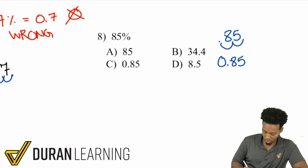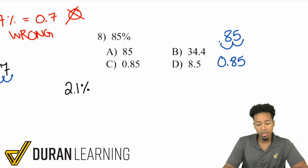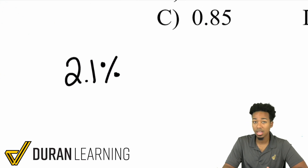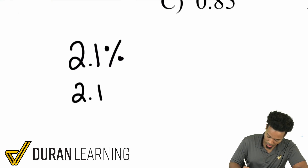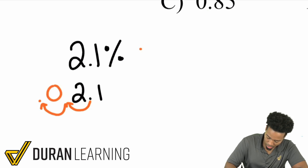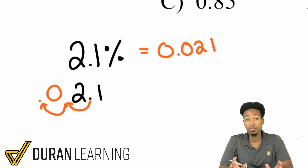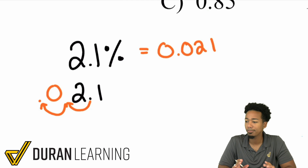Here are a couple of other examples. Let's say we're taking a look at 2.1%. If we wanted to turn 2.1% into a decimal, same idea applies. You take 2.1, move that decimal to the left once, twice, and you get 0.021. Just follow the rules and you're fine — move the decimal to the left two times, and any empty spaces, put a zero in there.